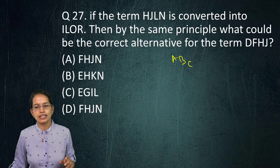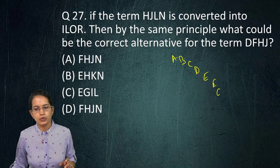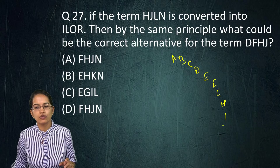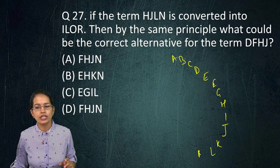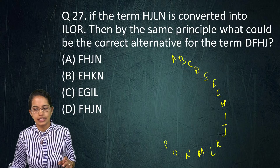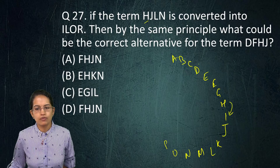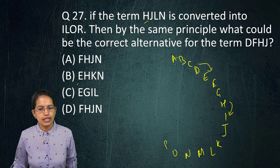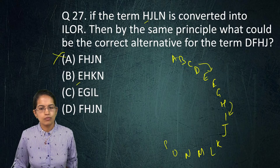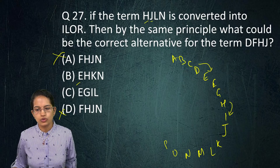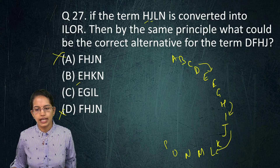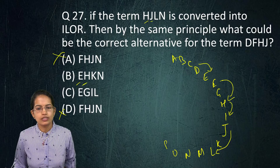The next question involves alphabets. You need to follow the kind of jump seen in the sequence. H becomes I — that's an immediate next letter, so D becomes E; you can remove options A and D. Then J becomes L — a jump of 1 — so F becomes H with a jump of 1. The only correct option is B.